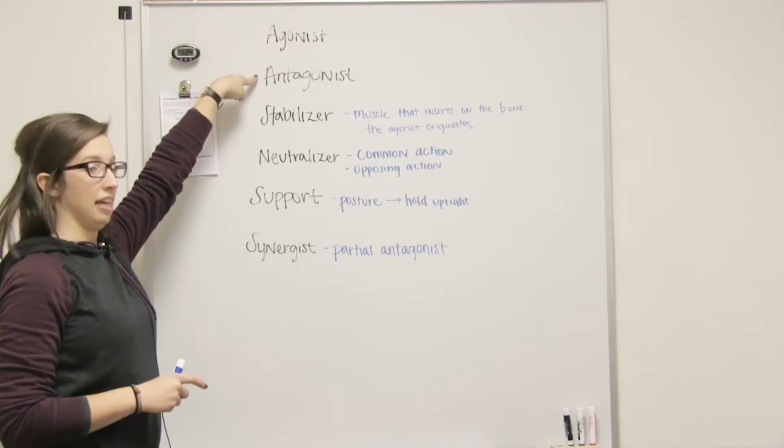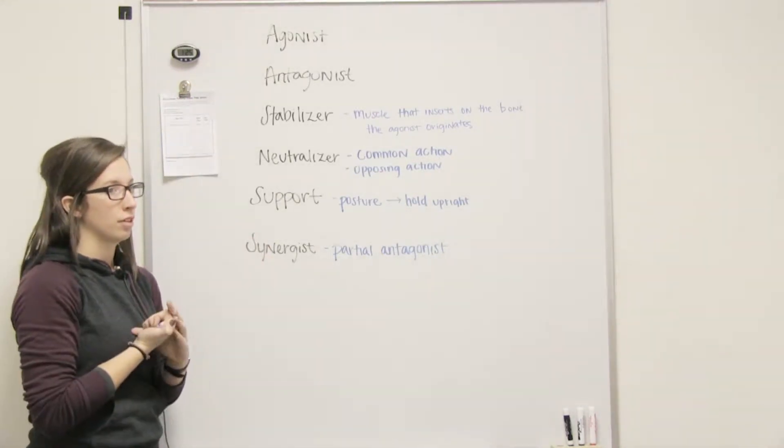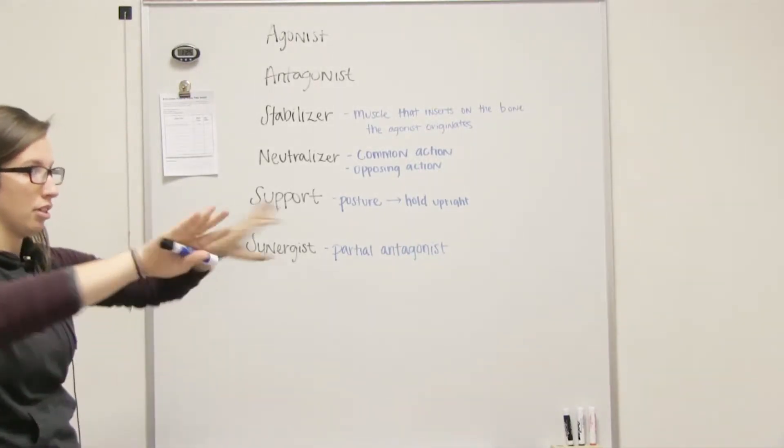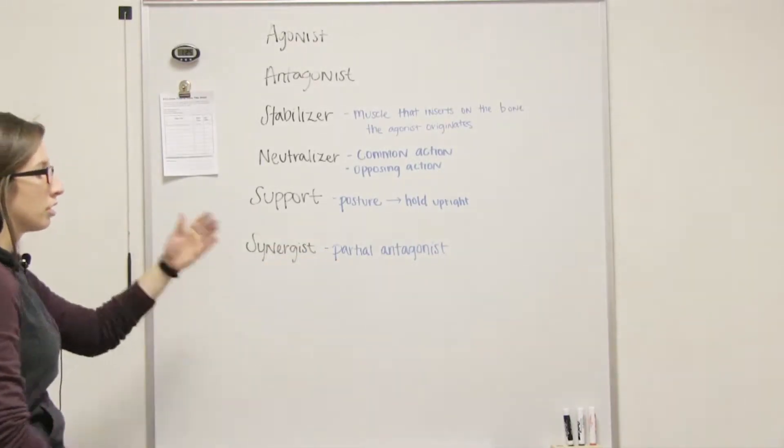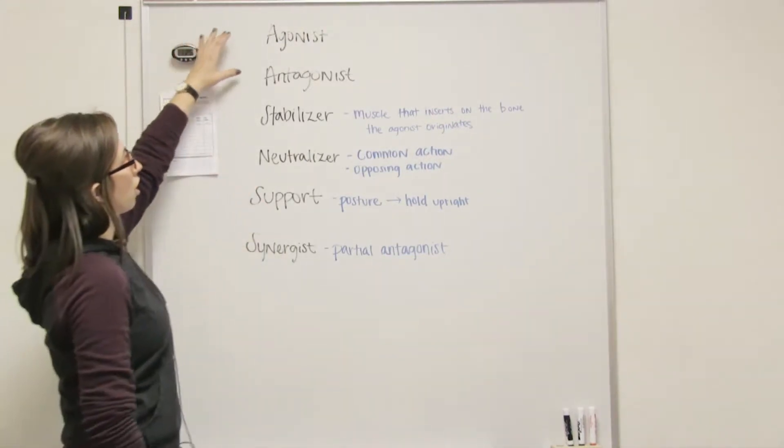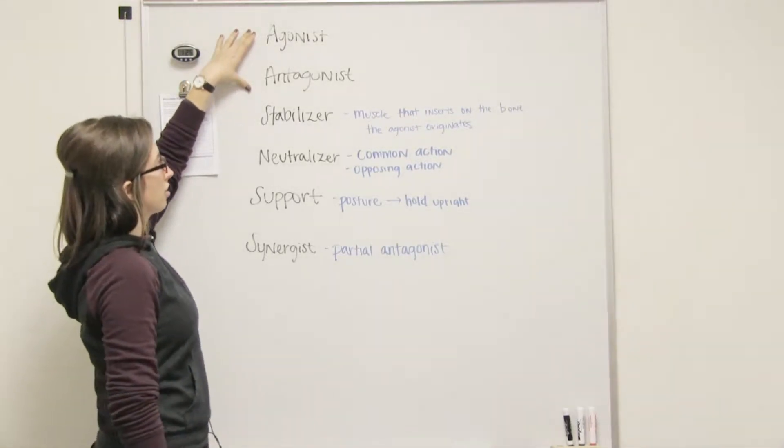Not quite. So an antagonist opposes all of the motions. Like triceps brachii and biceps brachii? Yep. So those would be complete opposites to each other because one does flexion, the other one does extension and things like that. So those are perfect opposites in all their actions.